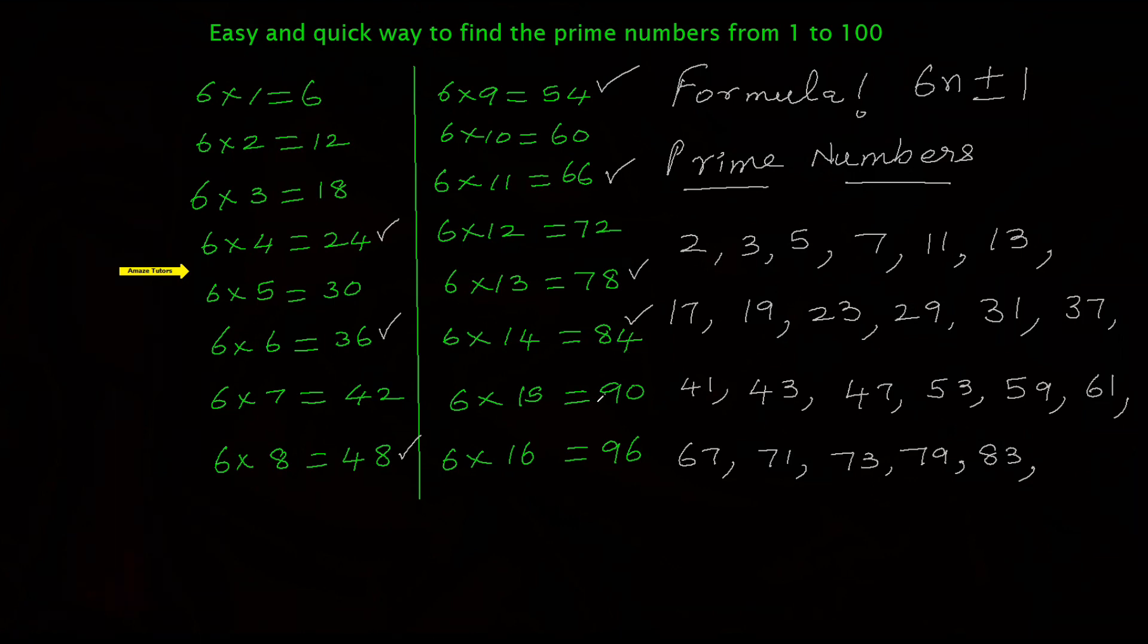90 take away 1: 89. It's a prime number. When you add 1 with that: 91, but it is divisible by 13. 13×7=91, so don't consider 91. It is not a prime number. Go for the last multiple.